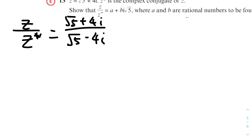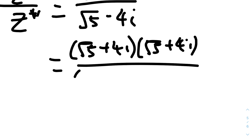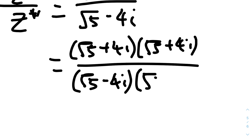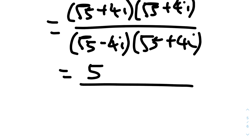We multiply top and bottom by the conjugate √5 + 4i to eliminate i from the denominator. The numerator: √5 × √5 = 5, root 5 × 4i gives 4√5 i twice, so 8i√5. The last term: 4i × 4i = 16 × (-1) = -16. So the numerator is 5 - 16 + 8i√5.